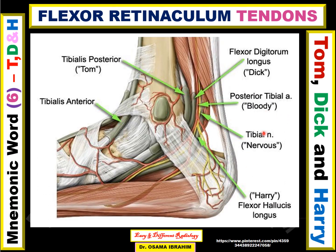Now I will use Tom, Dick, and Hari to remember the arrangement of tendons within the flexor retinaculum in the ankle. This is the flexor retinaculum between the medial malleolus and the medial aspect of the calcaneus. Tendons are arranged from anterior to posterior: Tom from the tibialis posterior, Dick from the flexor digitorum longus, then the vessels — posterior tibial artery, tibial vein, and tibial nerve — and Hari from the flexor hallucis longus.